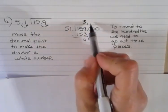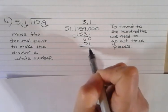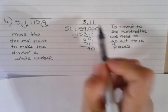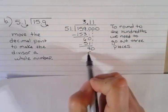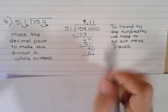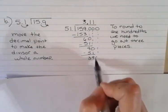51 goes into 60 one time, and then I subtract again. That gives me 9, and I bring down the next one. 51 goes into 90 one time, and 1 times 51 is 51.